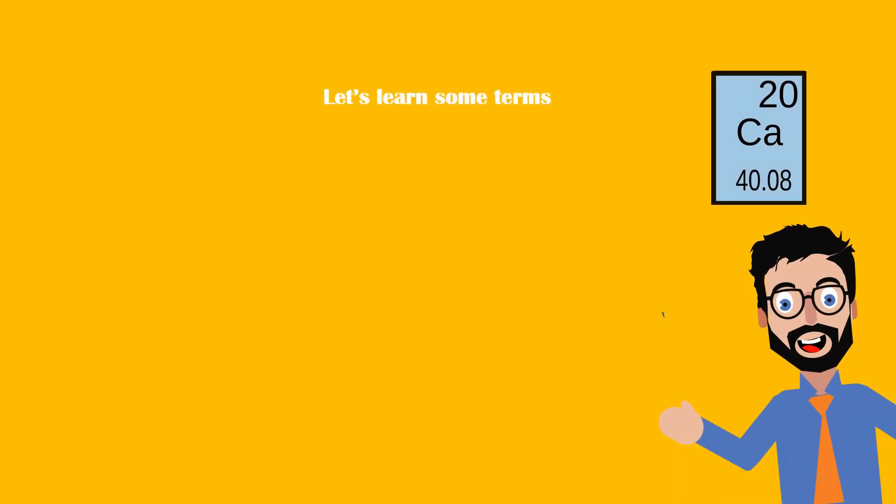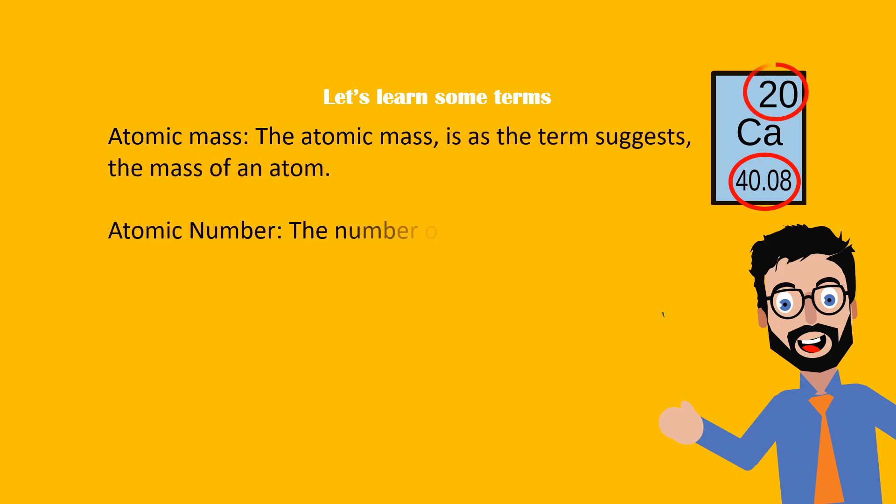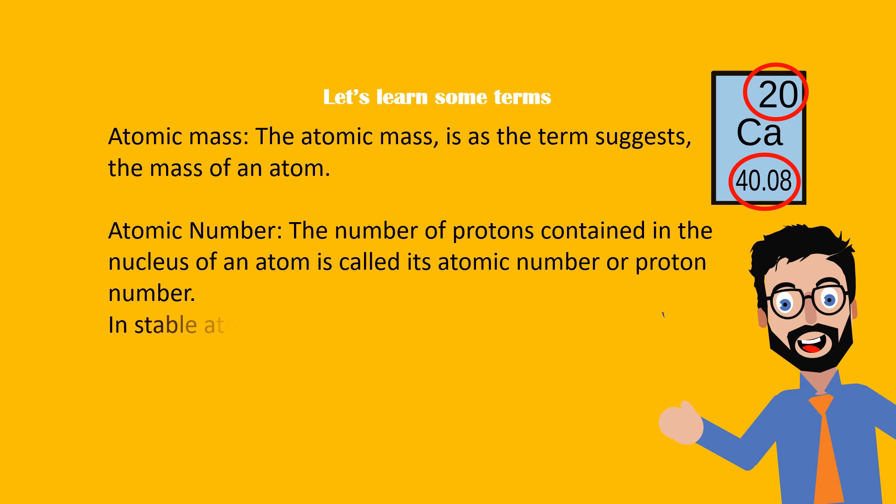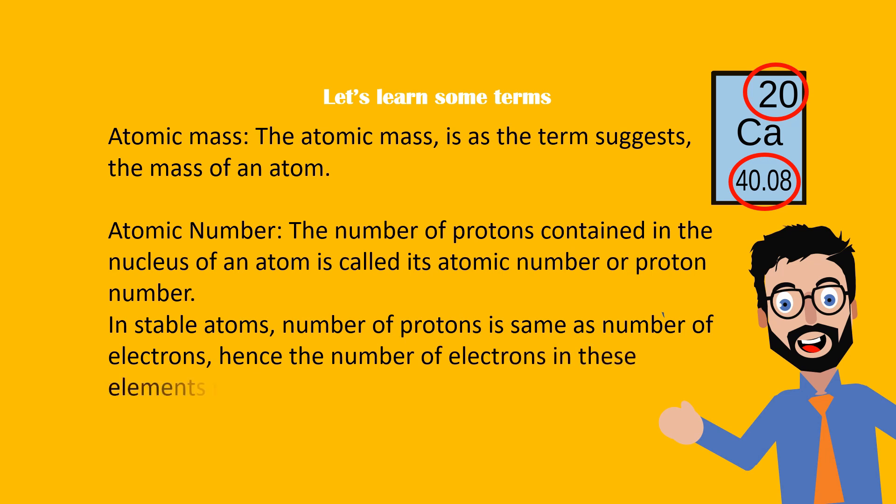Let us learn some terms. First is atomic mass. The atomic mass, as the term suggests, is the mass of an atom. The atomic number, however, is the number of protons contained in the nucleus of an atom, is called atomic number or proton number. In case of stable atoms, the number of protons is same as the number of electrons. Hence, the number of electrons in these elements is also called as atomic number.